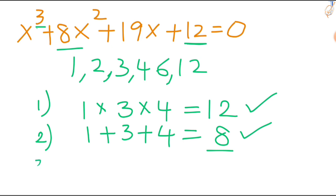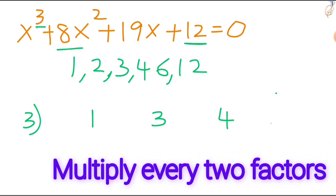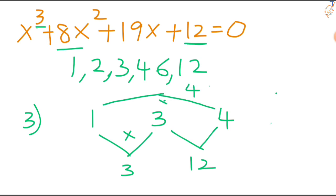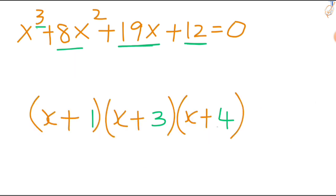Now for the third condition, take the numbers 1, 3, 4 and multiply every two factors. So 1 times 3 is 3, 3 times 4 is 12, then 1 times 4 is 4. Then just add these results: 12 plus 3 is 15, 15 plus 4 is 19. And this 19 is the same as the x coefficient. Three conditions are satisfied. Your factors are x plus 1, x plus 3, and x plus 4.